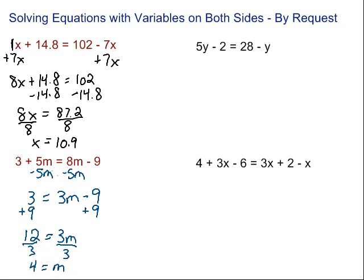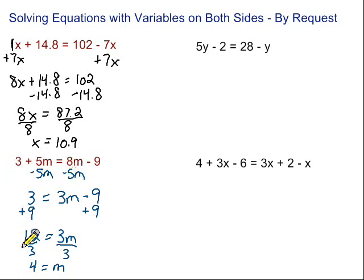You could put it back in and check it — let's do it mentally. 3 plus 5 times 4 is 20, so this side is 23. Over here, 8 times 4 is 32, minus 9 is also 23. 23 equals 23, so we know that our answer is correct.